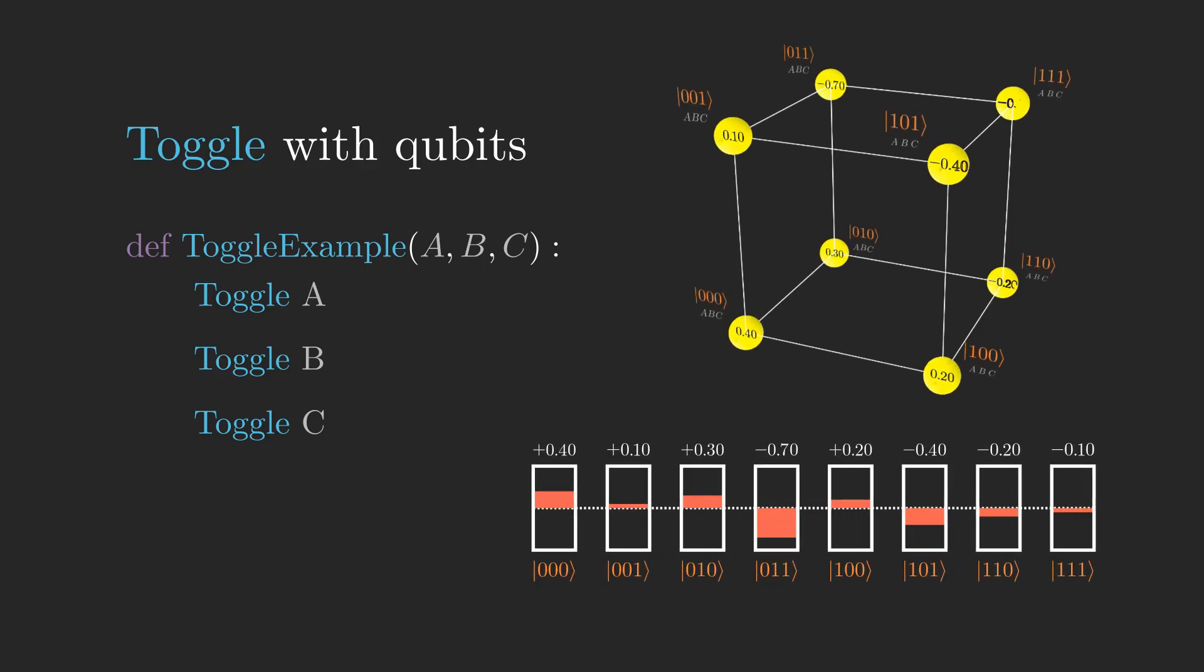In this picture, toggling A corresponds to swapping the corners on the face of the cube where A equals 0 with those where A equals 1. Likewise, toggling B and C correspond to swapping along the other cardinal directions.